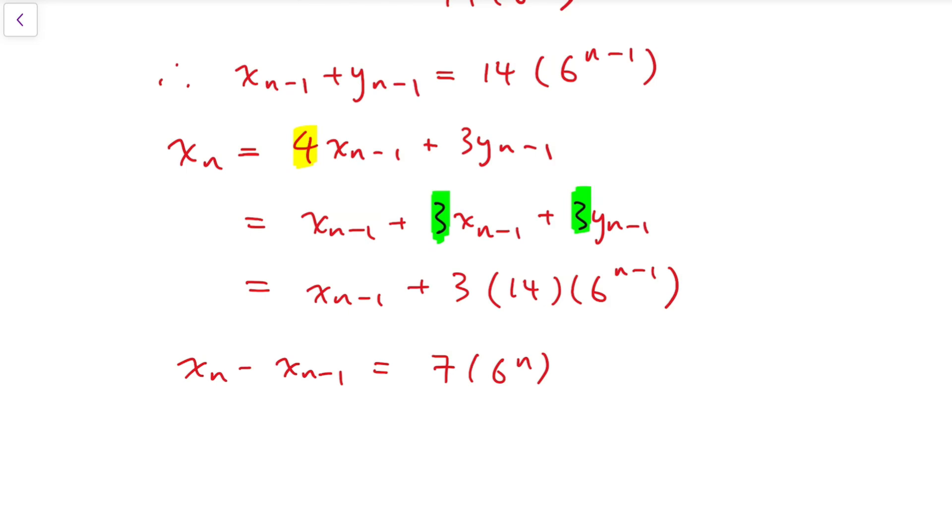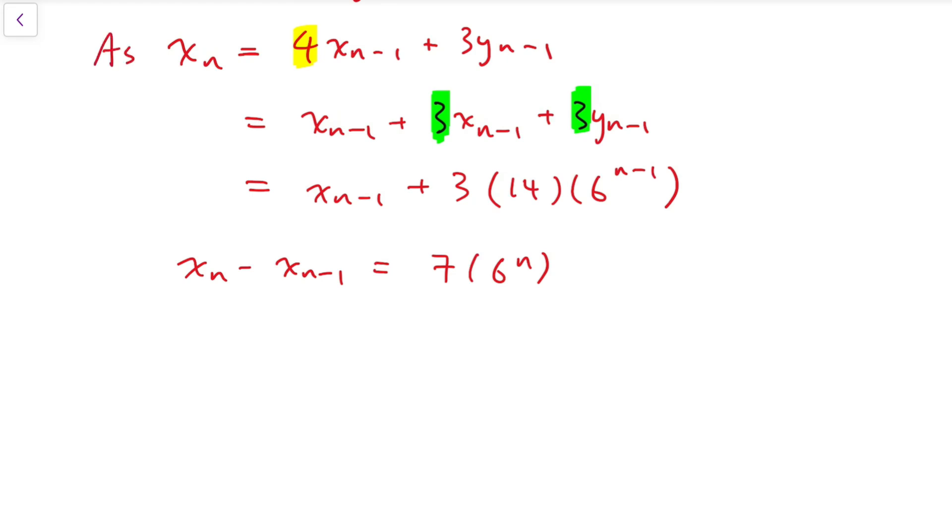We can do similar things on the sequence y. Recalling the equation that we are given on yn. Using a similar argument, I can split the first term, 3yn-1 into yn-1 plus 2yn-1. And we have similar results. And so, therefore, we can say that yn minus yn-1 is equal to 14 over 3 times 6 to the power n.